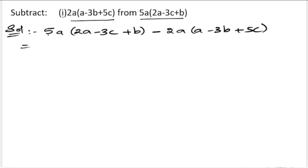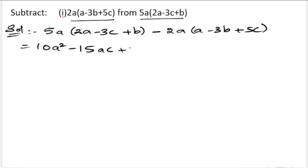Multiply 5 with 2: 5 twos are 10, so 10a·a = 10a². In front of 5 there is no sign, that means it is plus, so plus into minus is minus. 5 threes are 15, so minus 15ac. Next, 5 into b: in front of b there is no number so there is 1, 5 ones are 5, giving plus 5ab.